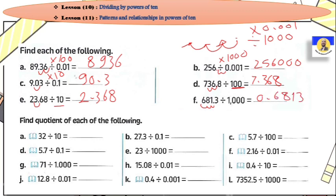يبقى كده عرفنا: divided by 0.01 اللي يبقى 100. وعرفنا divided by 100 يبقى go back. لكن you can divide it by 0.01 يبقى go forward.